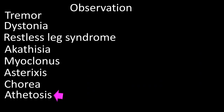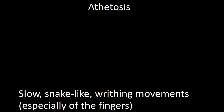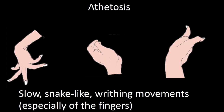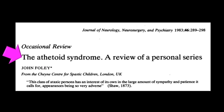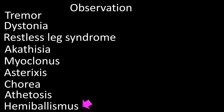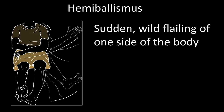After chorea, we will talk about athetosis. Athetosis is defined as slow snake-like writhing movements, especially of the fingers, where the hand takes many different and unusual positions. A review article titled 'The Athetoid Syndrome' by Foley emphasized the occurrence of this condition following neonatal hypoxic encephalopathy. Next, we will talk about hemiballism, which is characterized by sudden wild flailing movements involving one side of the body.